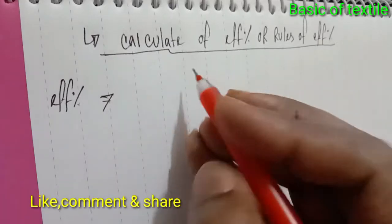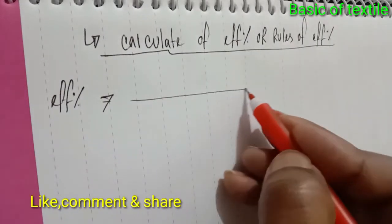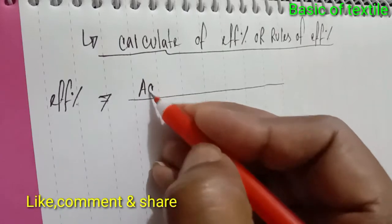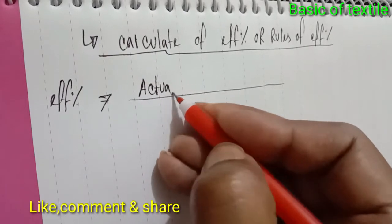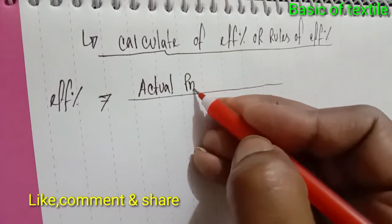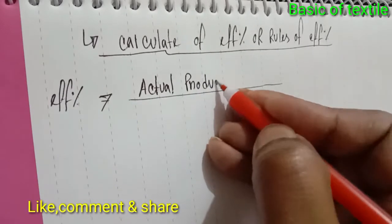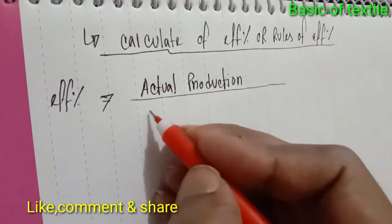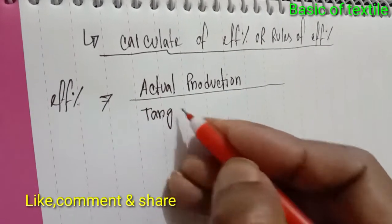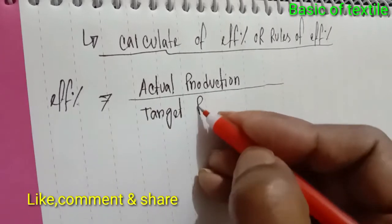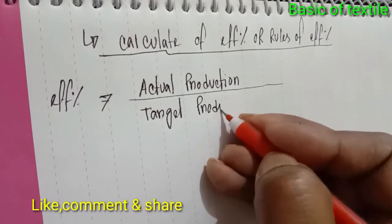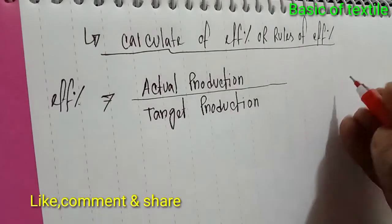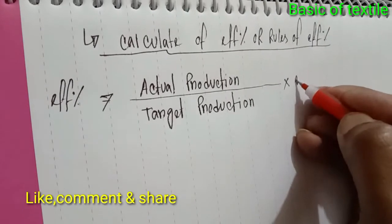This is the first sentence. The formula is: Actual Production divided by Target Production, into 100. This gives you the efficiency percent.